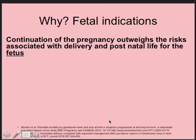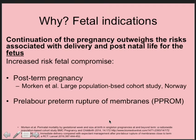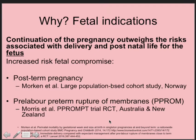Let's move on to fetal indications — where continuation of the pregnancy outweighs the risk associated with delivery and postnatal life for the fetus, even if that means preterm delivery. There is an increased fetal risk of compromise in post-term pregnancies, and I'll refer to a great study from Norway to explain further. Secondly, if the membranes rupture before term, we refer to this as preterm pre-labour rupture of membranes — PPROM — and a great study recently published from Sydney, Adelaide, and New Zealand in The Lancet dealt with women who had PPROM between 34 and 37 weeks.